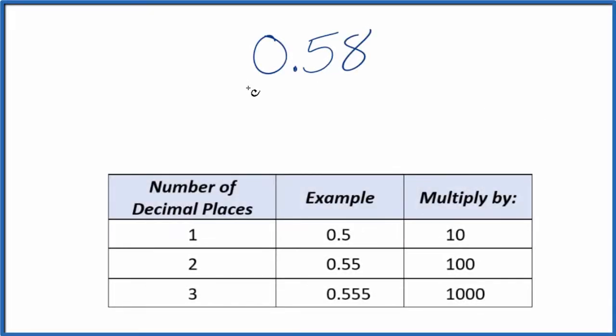If you need to change the decimal 0.58 to a fraction, here's how you do it. First off, let's call this 0.58 over 1. Since we're dividing by 1, we don't change the value, but now we have the start of a fraction.